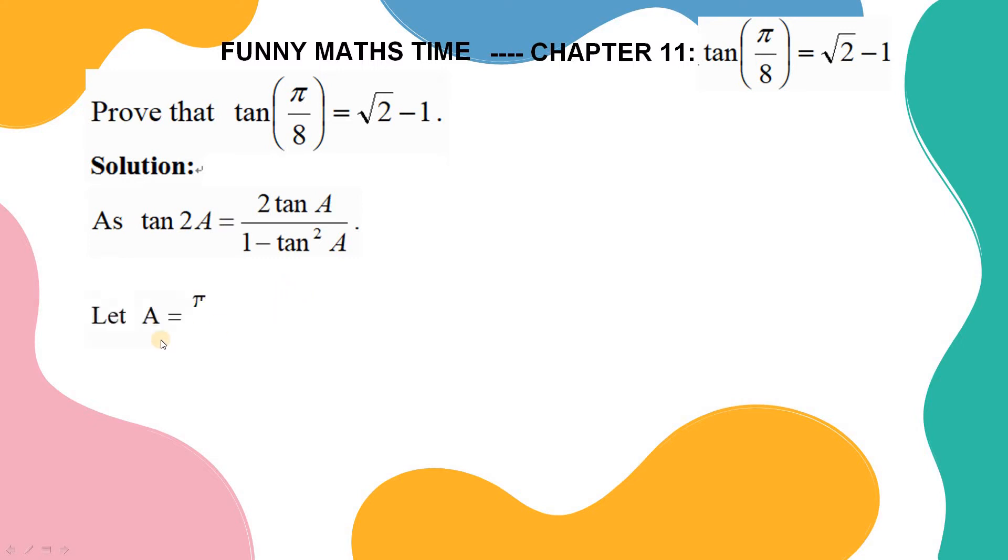And then if I put A equal to pi over 8, this becomes pi over 4. It means tangent pi over 4 equals 2 tangent pi over 8 over 1 minus tangent squared pi over 8.